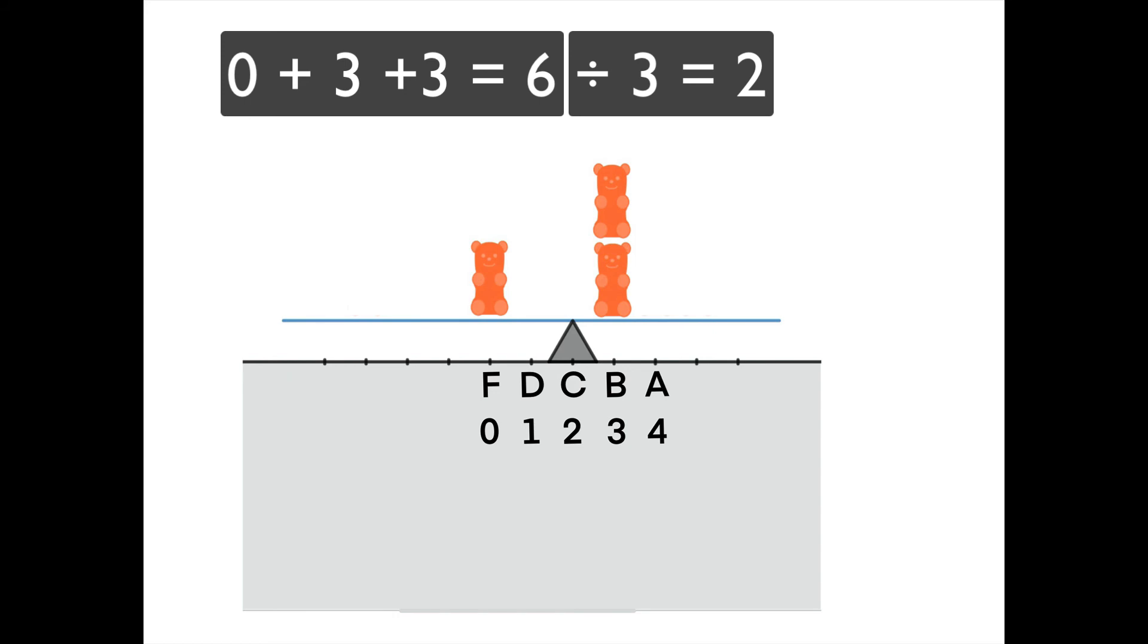So again, we've found two ways that we can balance out an F, either by getting one A or by getting two B's.